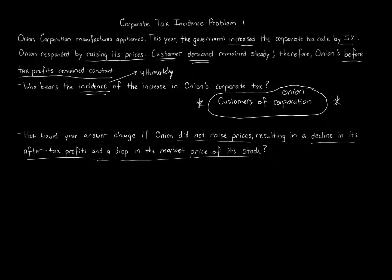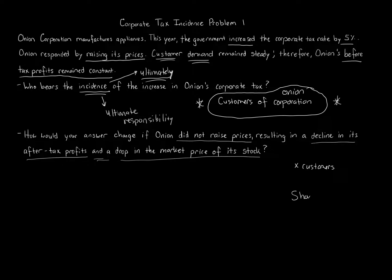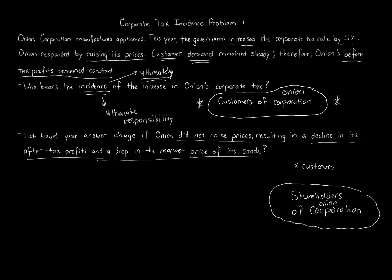Now the picture changes. They are paying more in taxes. Who bears the cost? It's not the customers — we didn't raise prices. So it leads us to either the corporation or the shareholders. Since incidence is about who ultimately bears the final responsibility, it's going to be the shareholders. Declining profits and a lower market stock price confirm it's the shareholders of Onion Corporation who bear the incidence in this scenario, not the customers.